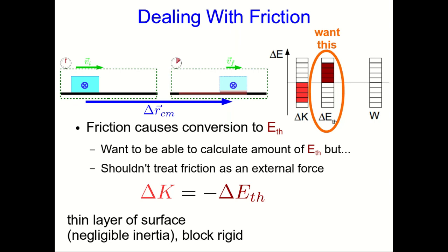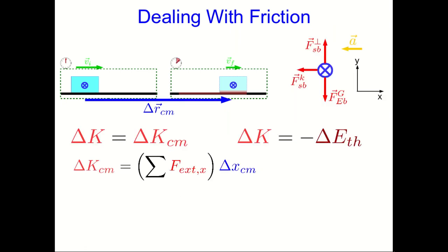the displacement of the center of mass of the system is just the displacement of the center of the block. And because the block is rigid, every part of it moves with the same velocity, and the kinetic energy of the block is going to be the same as the kinetic energy of the system.